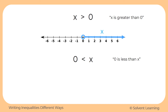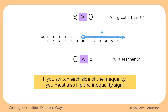Look at both of the ways that we wrote this inequality — they look very different. The one at the top has x on the left-hand side and our number on the right-hand side. The one below has it flipped: 0 is on the left and x is on the right. But they both represent the same set of values for x. So if you decide to flip your inequality around, make sure that you also flip the symbol around.